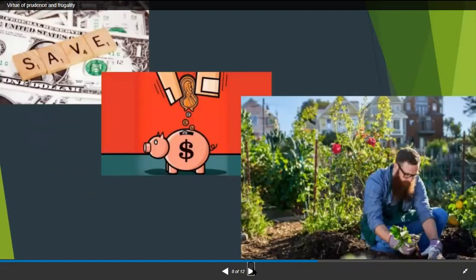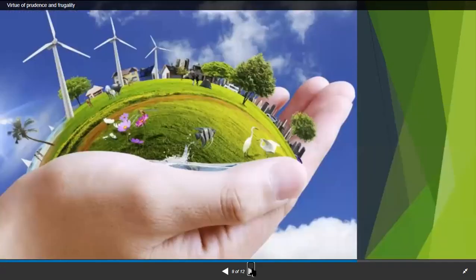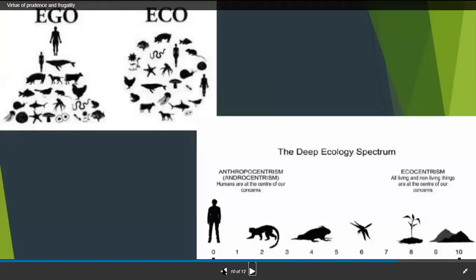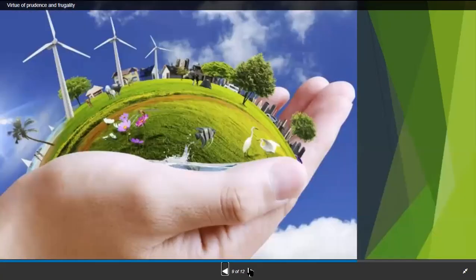How about these pictures? In this picture, we save money for the future. We plant vegetables and fruits instead of buying those things. These pictures portray being prudent. Prudence and frugality are connected.